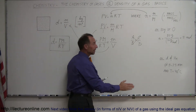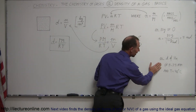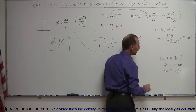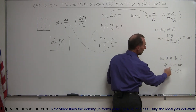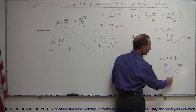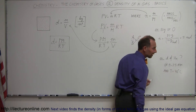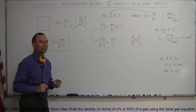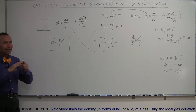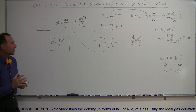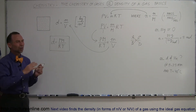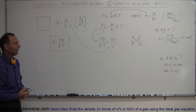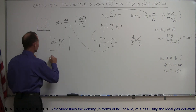Let's take an example. We want to find the density of helium gas when the pressure is 2.5 atm and the temperature is 40 degrees centigrade. We don't need to know the volume — density is simply mass per unit volume — so let's plug in what we know.